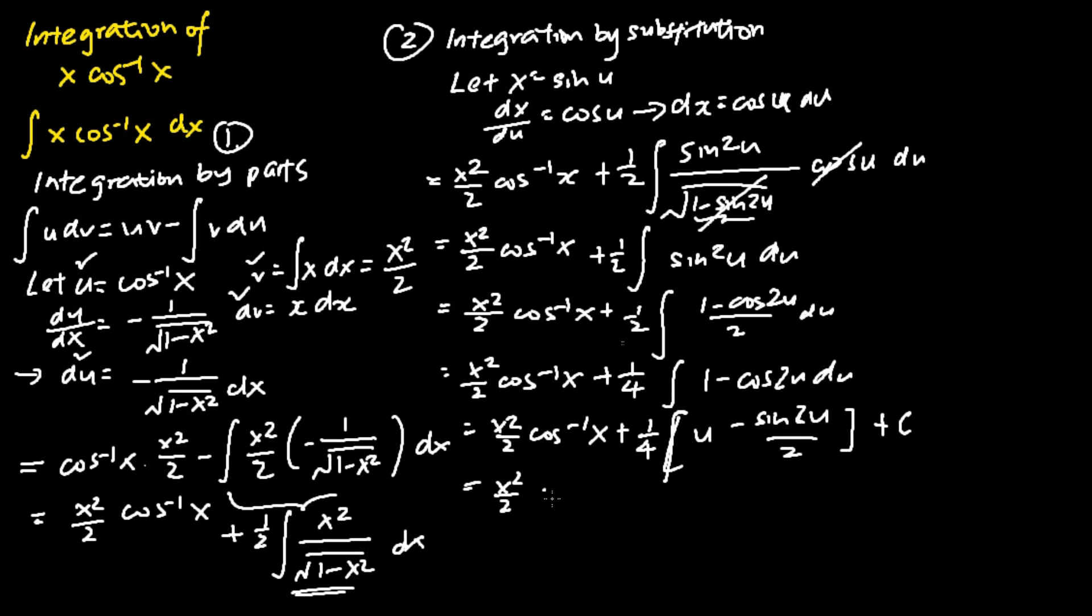we now would like to convert the variable u back into x, because my question is expressed in terms of x. We will convert the sine 2u into 2 sine u cosine u over 2 plus c. And basically, the 2 can be cancelled out in this manner.